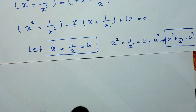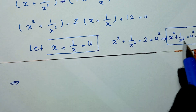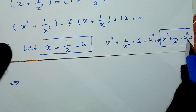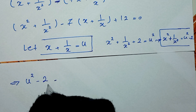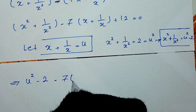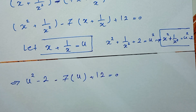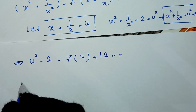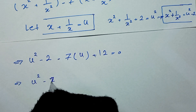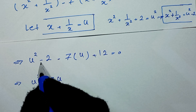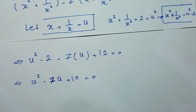We rewrite the equation substituting: x squared plus 1 over x squared becomes u squared minus 2, and x plus 1 over x becomes u. So the equation becomes u squared minus 2 minus 7u plus 12 equals 0, which simplifies to u squared minus 7u plus 10 equals 0.